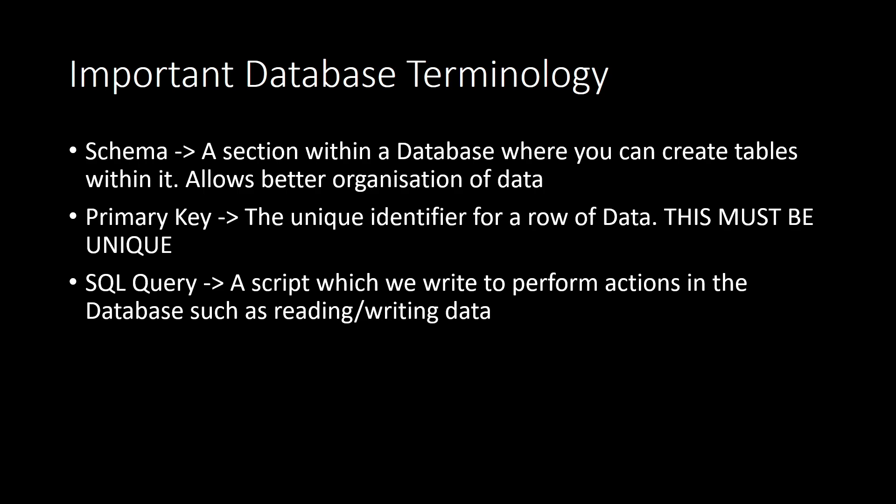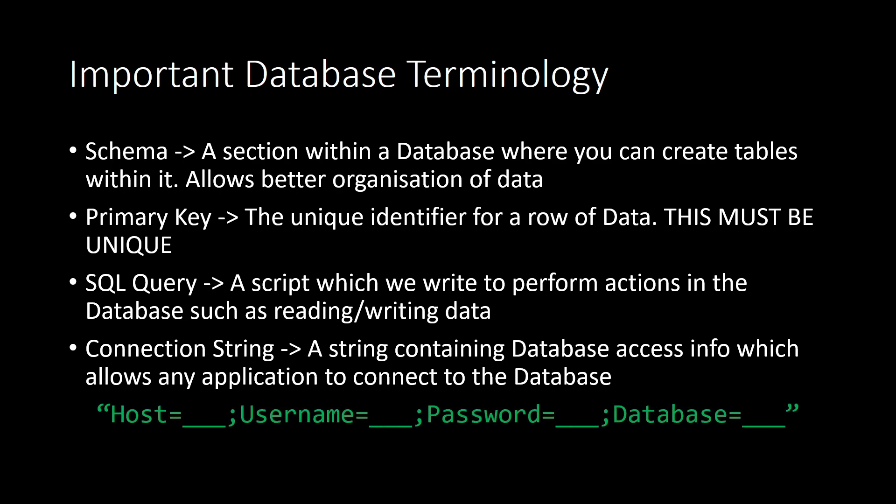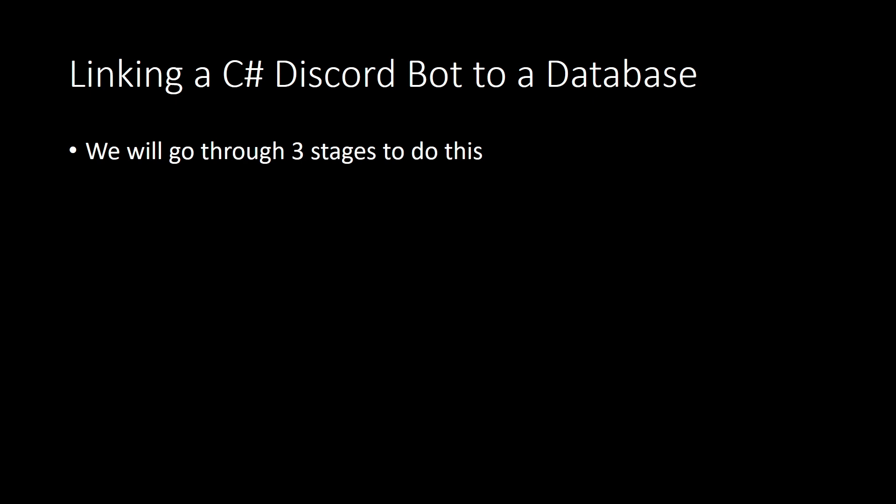To prevent conflicts, each primary key for each row of data must be different. Next: an SQL query. This is basically a question we're asking the database — for example, 'get this user where their username equals bot.' An SQL query is a script we write to query a database and get specific information. We'll be using this a lot in our Discord bot, such as in a profile system where we retrieve user-specific information. The last term is the database connection string — when we implement our database in the Discord bot, we use this connection string, which contains our hostname, username, password, and similar details.